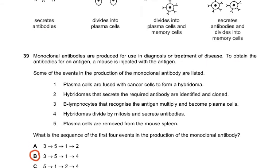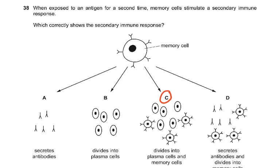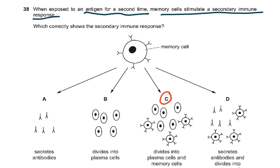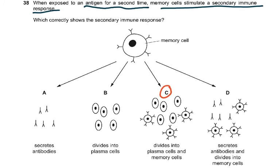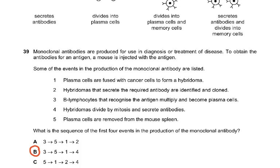Question 38: When exposed to an antigen for a second time, memory cells stimulate a secondary immune response. Which correctly shows the secondary immune response? The answer was C: divides into plasma cells and memory cells.